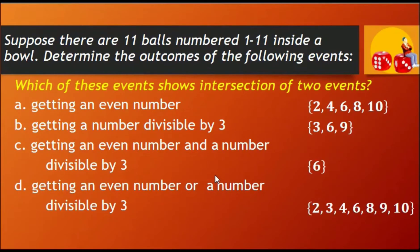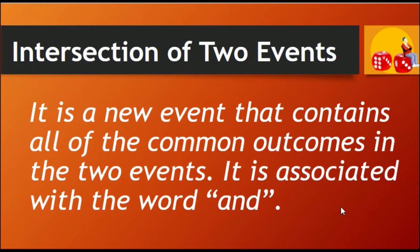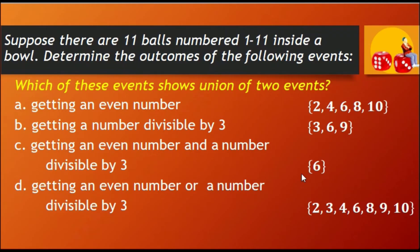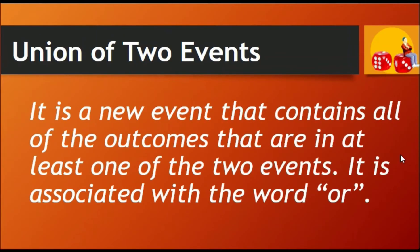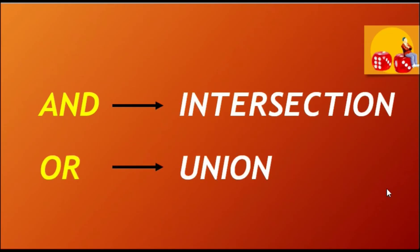Now, which of these 4 events shows an intersection of 2 events? Correct! That is event C because it contains the element 6, which is the common element of events A and B. Remember that the intersection of 2 events is the new event that contains all of the common outcomes in the 2 events. It is associated with the word AND. The union of 2 events is associated with the word OR.